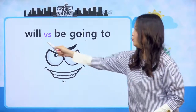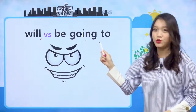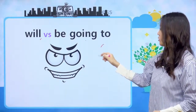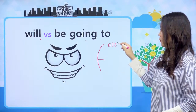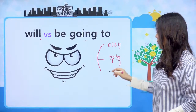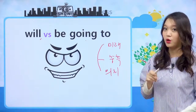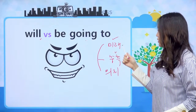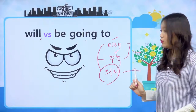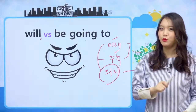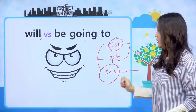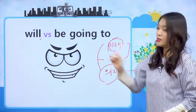우리 친구들 will하고 be going to 익숙하죠? 우리 조동사 공부할 때 will 공부를 했었죠. will은 총 3가지 성질이 있었는데, 미래가 있었고, 두 번째는 추측 기능이 있었고, 세 번째는 의지의 기능이 있었어요. 미래와 추측은 be going to와 바꿔 사용할 수 있지만 의지의 will은 be going to와 바꿔 사용할 수 없다까지 우리 친구들 기억해줘야 돼요.